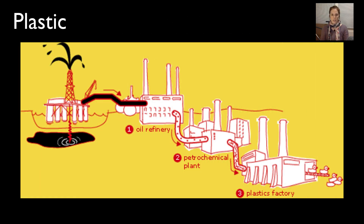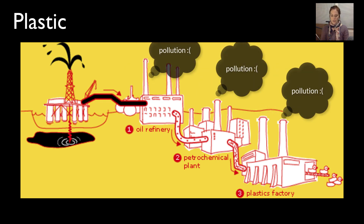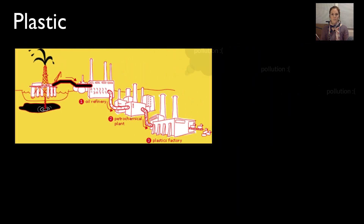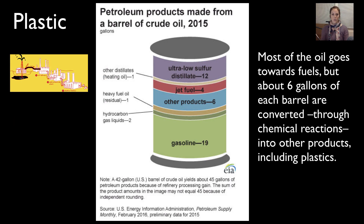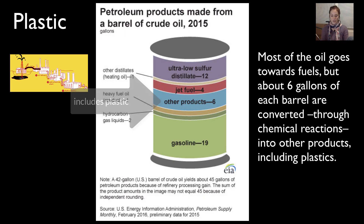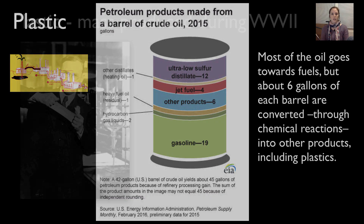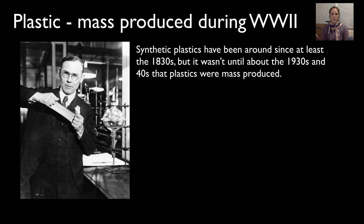Most plastics today come from petroleum. The oil gets separated into different parts in a refinery, and some of those parts are moved to a factory and made into plastics. A typical barrel of crude oil gets refined into about 45 gallons of products — most goes to fuel, and about six gallons gets made into other products including plastic. So we benefit from this natural resource because we get fuel and other products out of it.